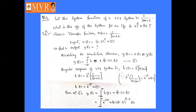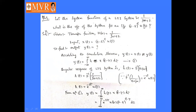Let us do some problems on LTI systems. The first problem: the system function of an LTI system is H(ω) = 1/(jω + 2). Find the output of the system for an input x(t) = (0.8)^t · u(t).